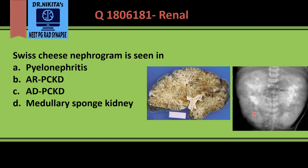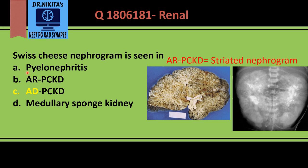This is a newborn IVP where both kidneys are enlarged and there is striated nephrogram bilaterally — so this is autosomal recessive. To summarize: autosomal recessive polycystic kidney disease gives a striated nephrogram, while autosomal dominant polycystic kidney disease gives a Swiss cheese nephrogram.